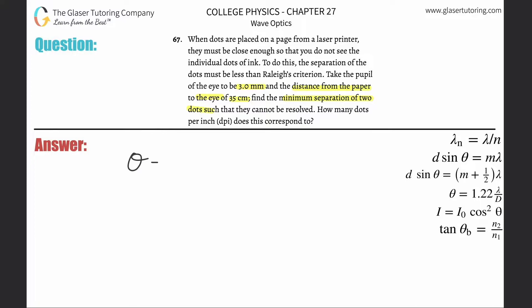We need two formulas. This represents the minimum angle of resolution, equal to 1.22 multiplied by the wavelength of the light divided by the diameter of the aperture — in this case, the pupil. We also need this other formula: the minimum angle of resolution multiplied by the maximum distance between the two objects, meaning the paper and the eye, equals the minimum distance between the two dots, or the two things that are trying to be resolved.